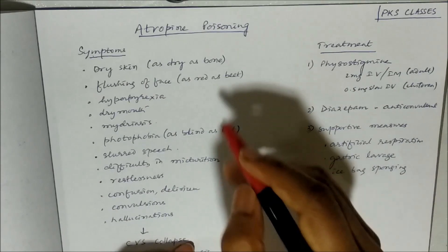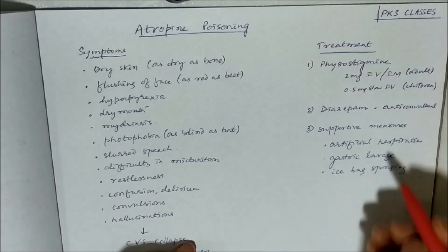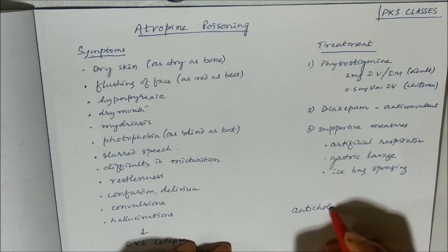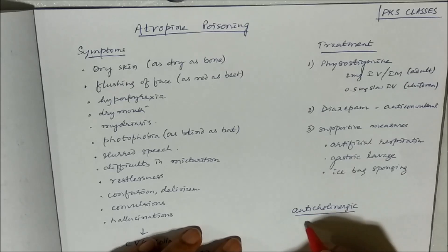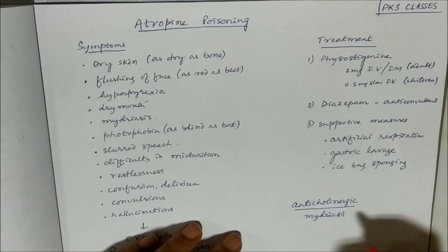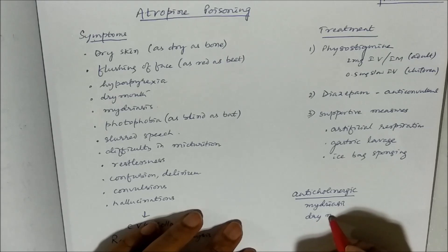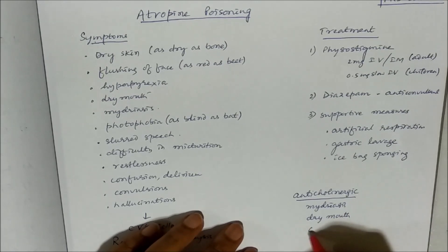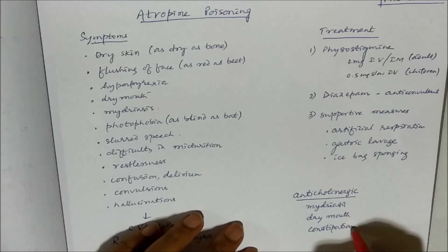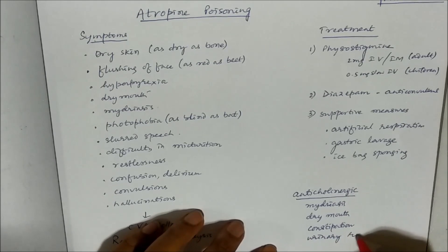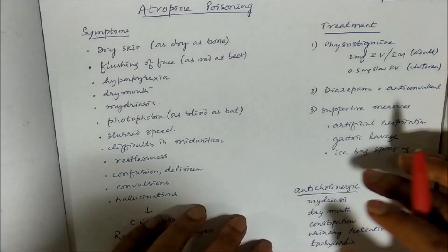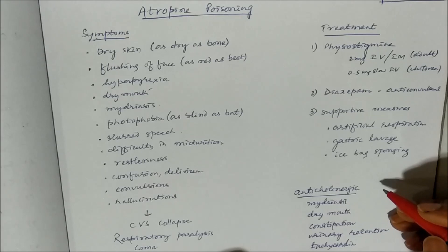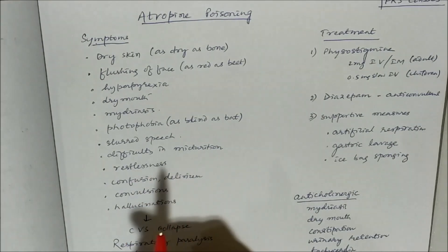Welcome to PKS Classes. Today we will study atropine poisoning. Atropine is an anticholinergic drug, and the common side effects of any anticholinergic drug include mydriasis (increase in pupil size), dry mouth due to decreased secretions, constipation due to decreased GI motility, urinary retention, and tachycardia.